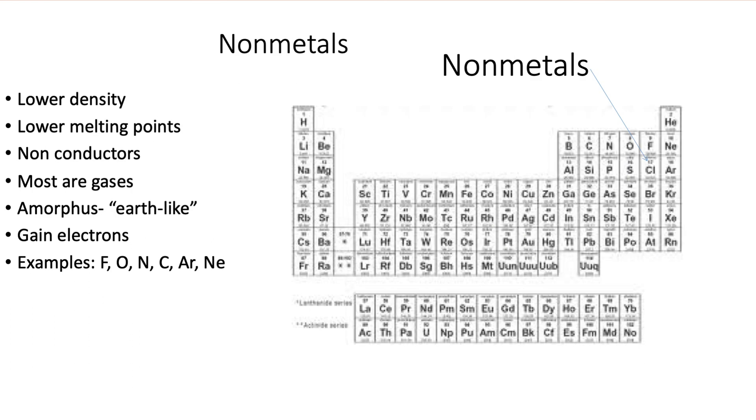Now we have nonmetals. Nonmetals are the opposite. They have lower density and melting points. They're not good conductors of heat and electricity. Most are gases. They're amorphous or earth-like. They gain electrons. And some examples are fluorine, oxygen, nitrogen, carbon, argon, and neon.